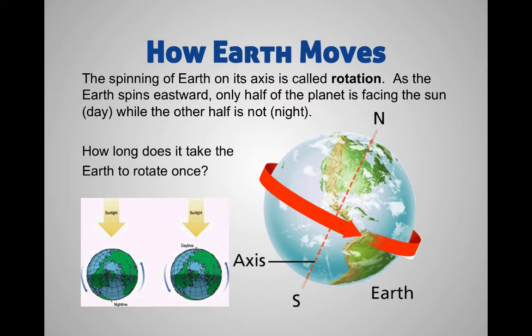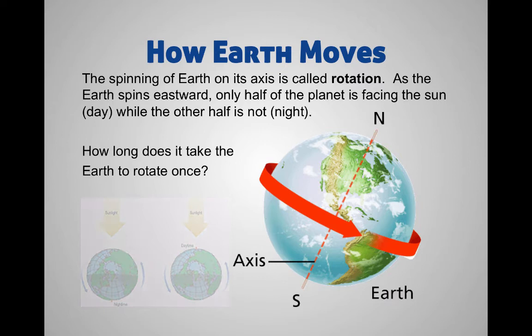Only half of the planet is facing the sun while the other half is not. No matter what time of day it is, half of the Earth is always going to be lit up by the sun. Whether or not you experience day or night just depends on where you are on the planet and if you're facing the sun or not. Half of the Earth is always lit up and the other half is dark — so there's your day and night. Day and night is caused by rotation.